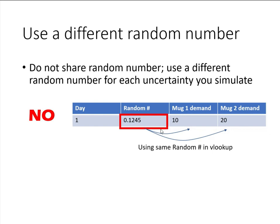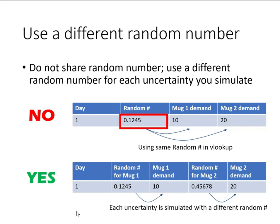The reason is when you do this, you're creating correlation between these two simulated numbers, and that may not be what happens in the real world. This is what you should do: you should have a random number dedicated to every demand you simulate. This applies to every simulation — you always should have a dedicated random number for everything you try to simulate.